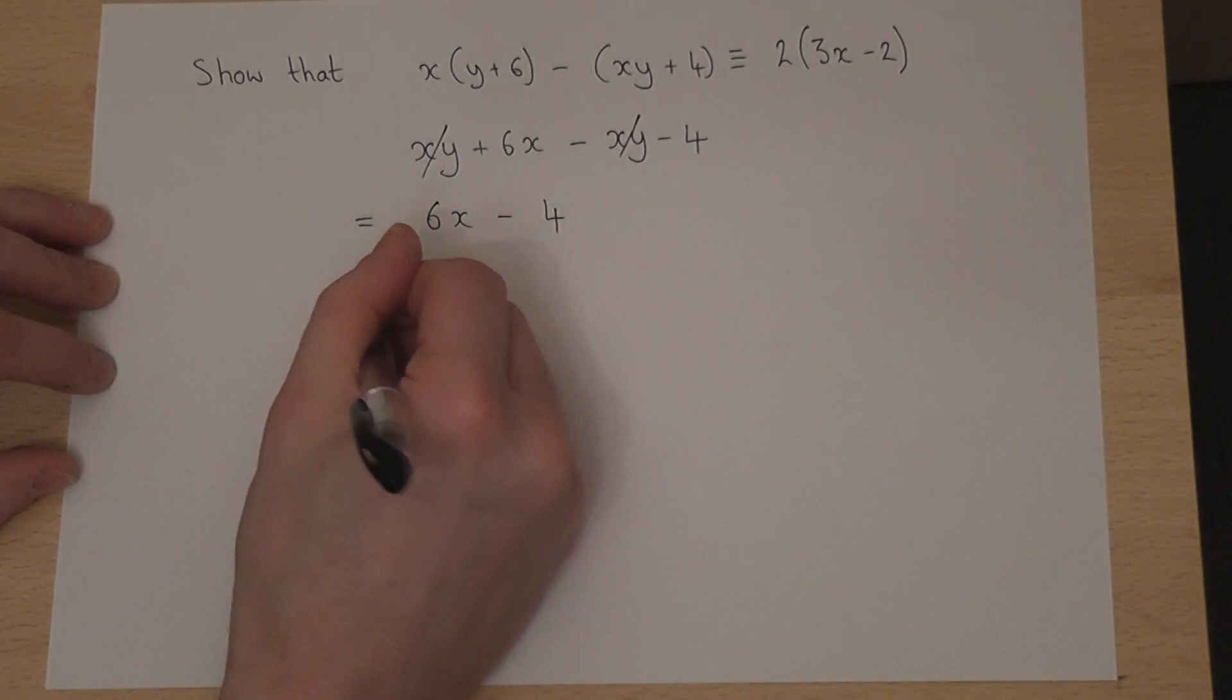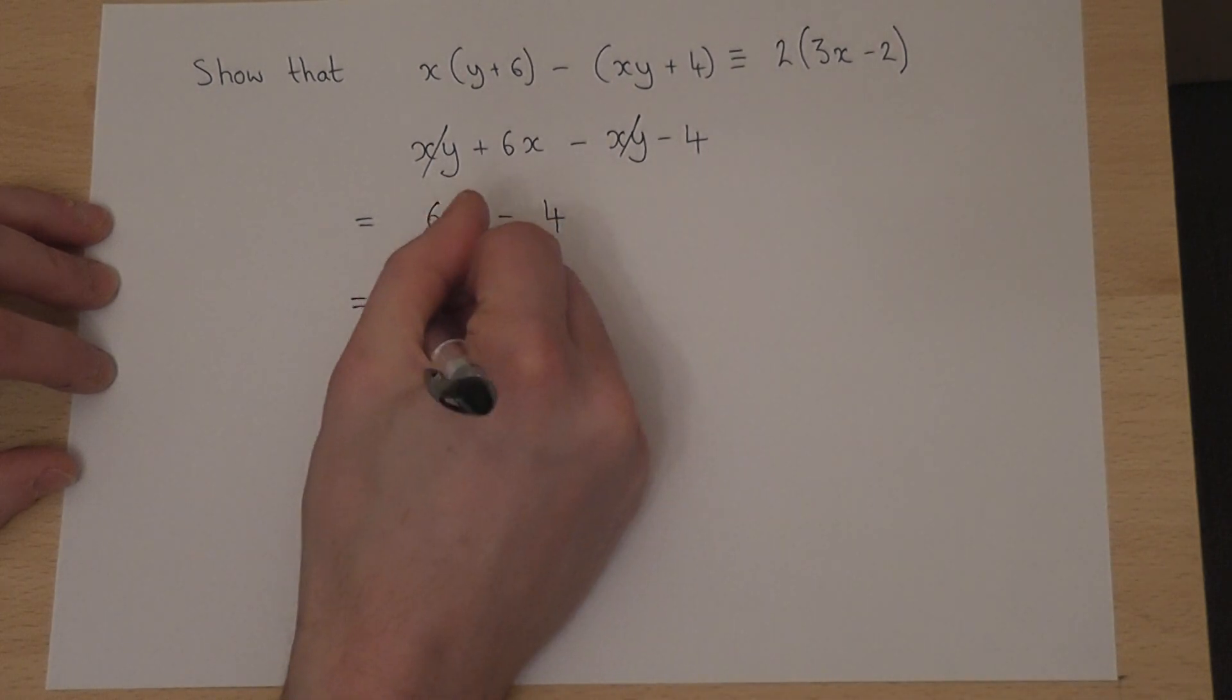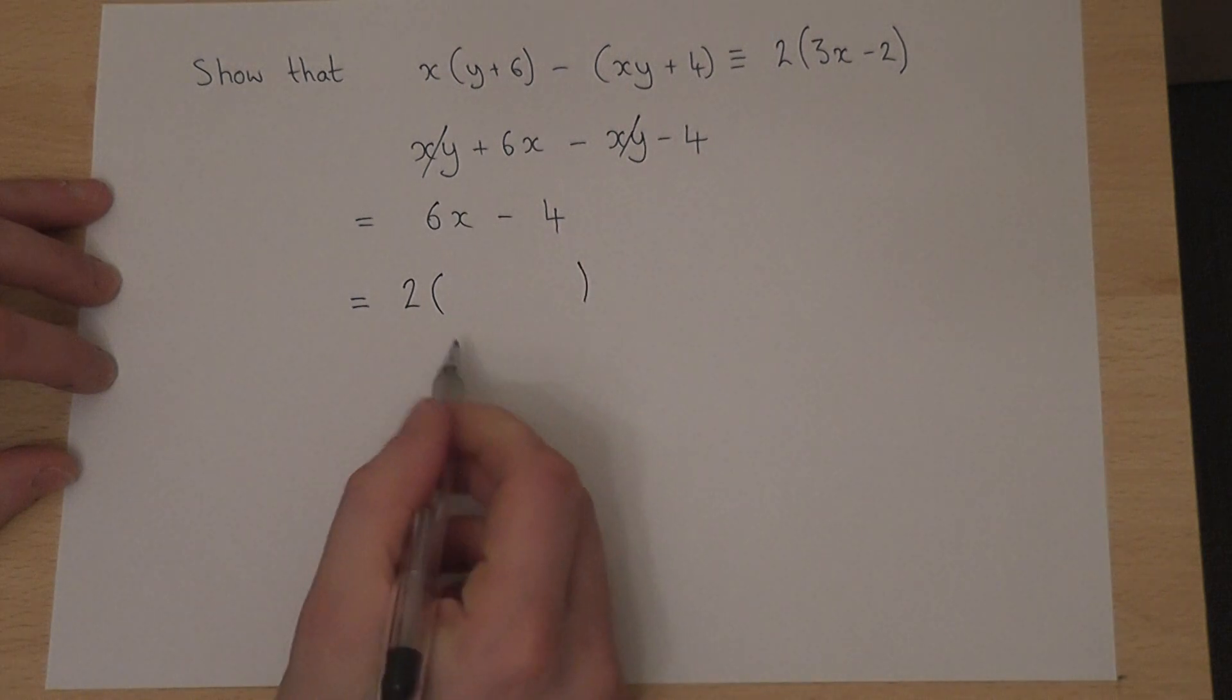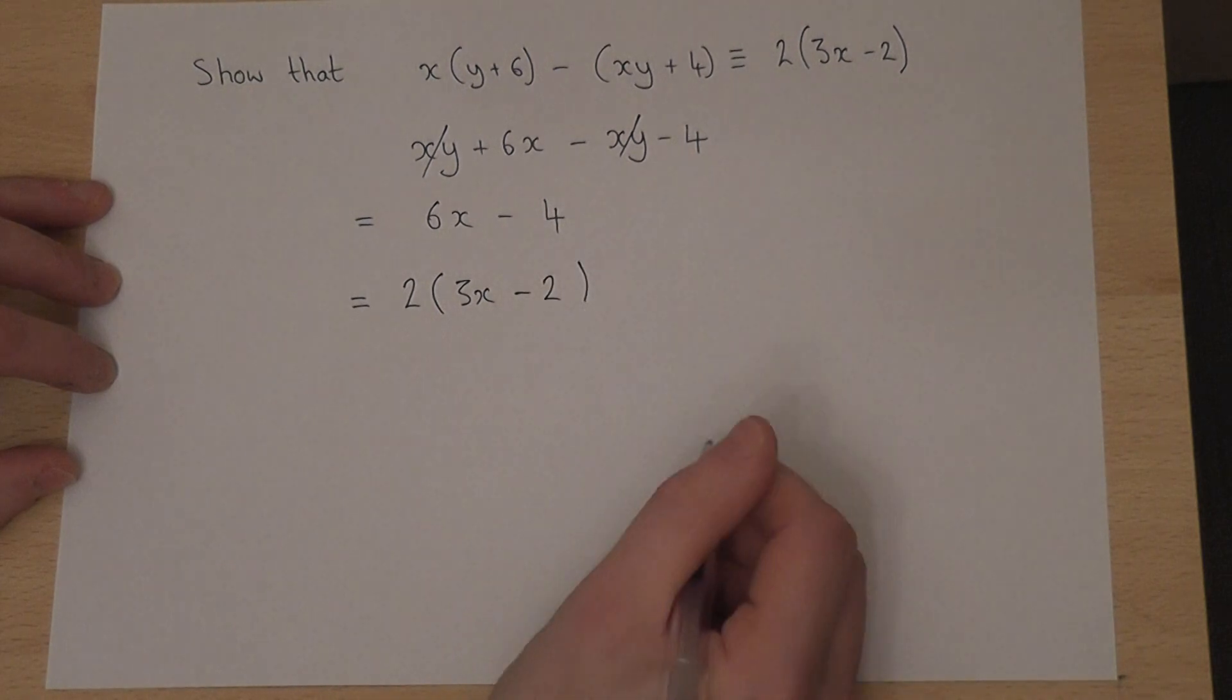Now, 6 and 4 have a common factor of 2. So I can factorise, and 2 lots of 3x is 6x, and 2 lots of 2 is 4.